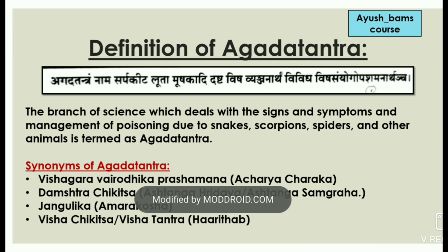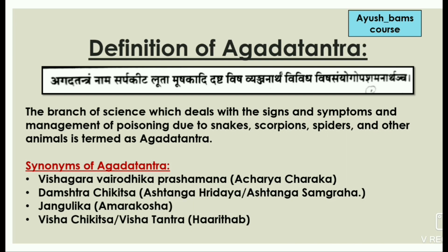Definition of Agadha Tantra: 'Agadha Tantra nama sarpa keeta luta mushikadi dasta visha venja nardha vivida visha samyoga upasham nardha.' This means the branch of science which deals with the signs and symptoms and management of poisoning due to snakes, scorpions, spiders, and other animals is termed as Agadha Tantra.